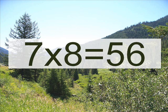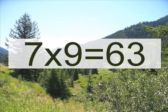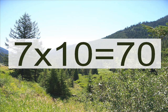Seven times eight equals? Fifty-six. Seven times eight equals? Fifty-six. Seven times nine equals? Sixty-three. 7 times 9 equals? 63. 7 times 10 equals? 70. 7 times 10 equals? 70. Let's do that again!